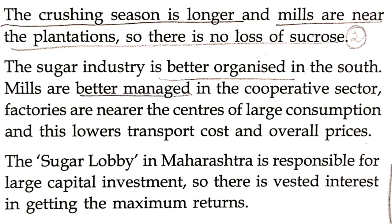The sugar industry is better organized in South India — especially Telangana, Maharashtra, Karnataka, Andhra Pradesh, and Tamil Nadu. The mills are better managed in the cooperative sector, particularly in Maharashtra, where the sugar cooperative sector is very well organized and politically very powerful. Factories are nearer to centers of large consumption, which lowers transport and overall prices.